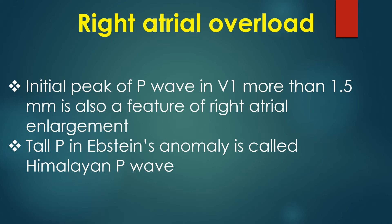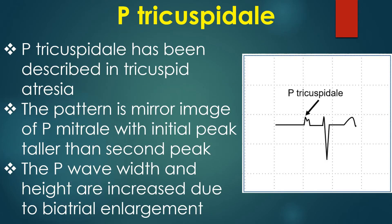Tall P in Ebstein's anomaly is called Himalayan P wave. P tricuspidale has been described in tricuspid atresia; the pattern is a mirror image of P mitral with the initial peak taller than the second peak. The P wave width and height are both increased due to biatrial enlargement.